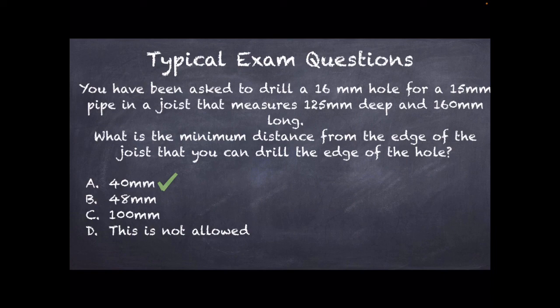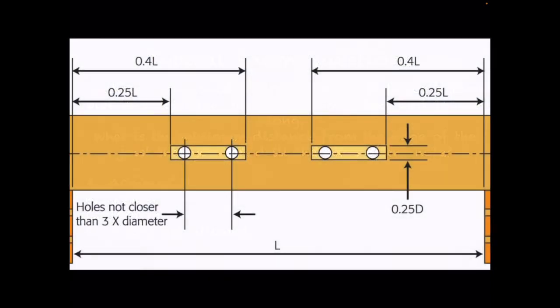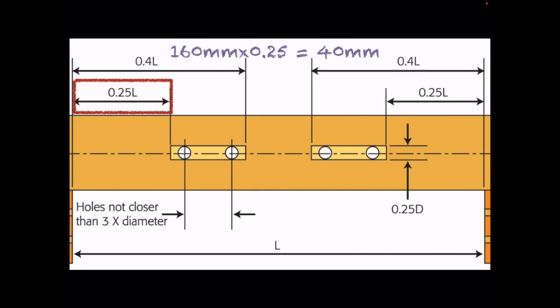The answer is 40 millimeters. How do we work that out? We look at the hole diagram — specifically the center point position — and the relevant measurement here is the length: 160 millimeters. You know you're not allowed to drill any closer than 0.25 of the length — a quarter of the length. So: 160 × 0.25 = 40 millimeters. That is the minimum distance from the edge of the joist.